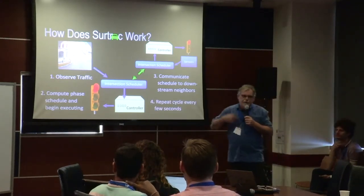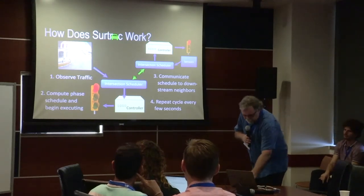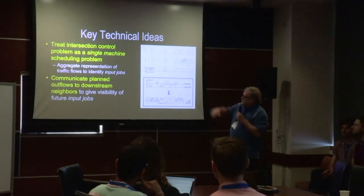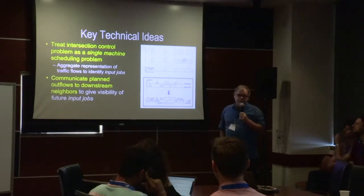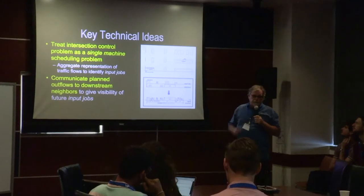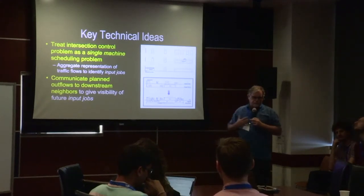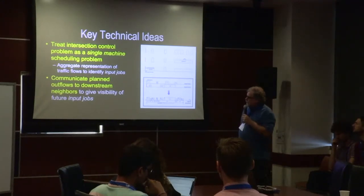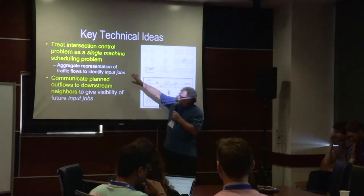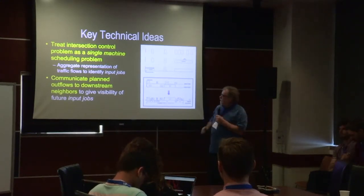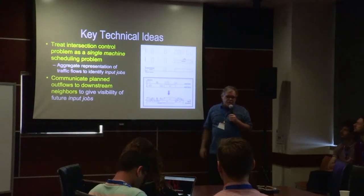Downstream traffic signals do the same thing — building their own local plans, but now with an expectation of what traffic is coming down the pipe behind what their local sensors can see. This lets them build a longer horizon plan, which is the key that makes the whole thing work. The whole process repeats every second or two — very real time.